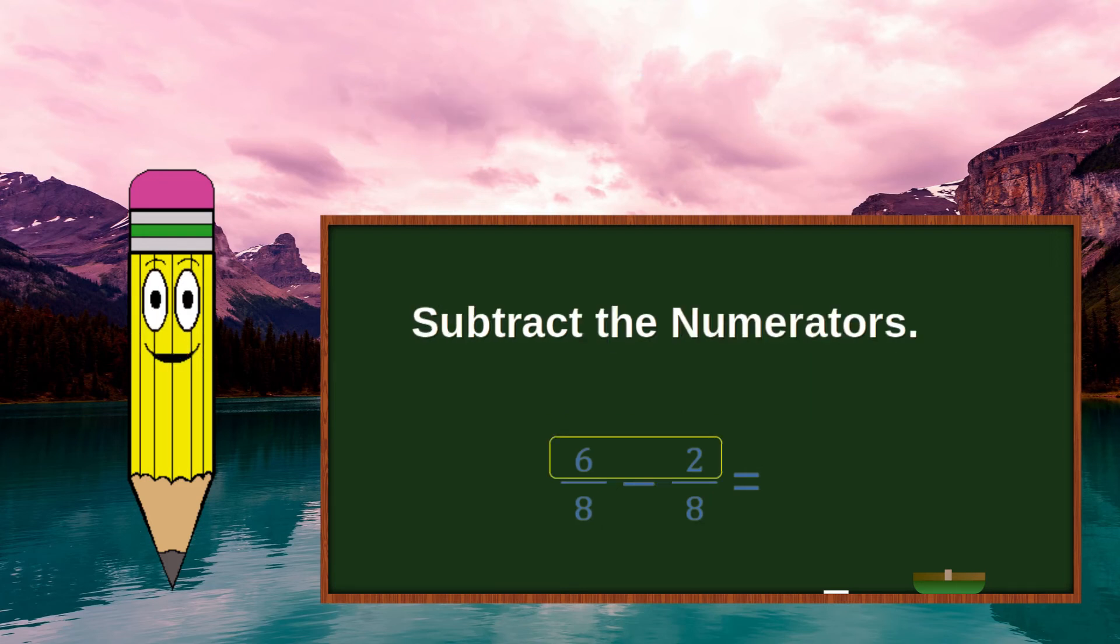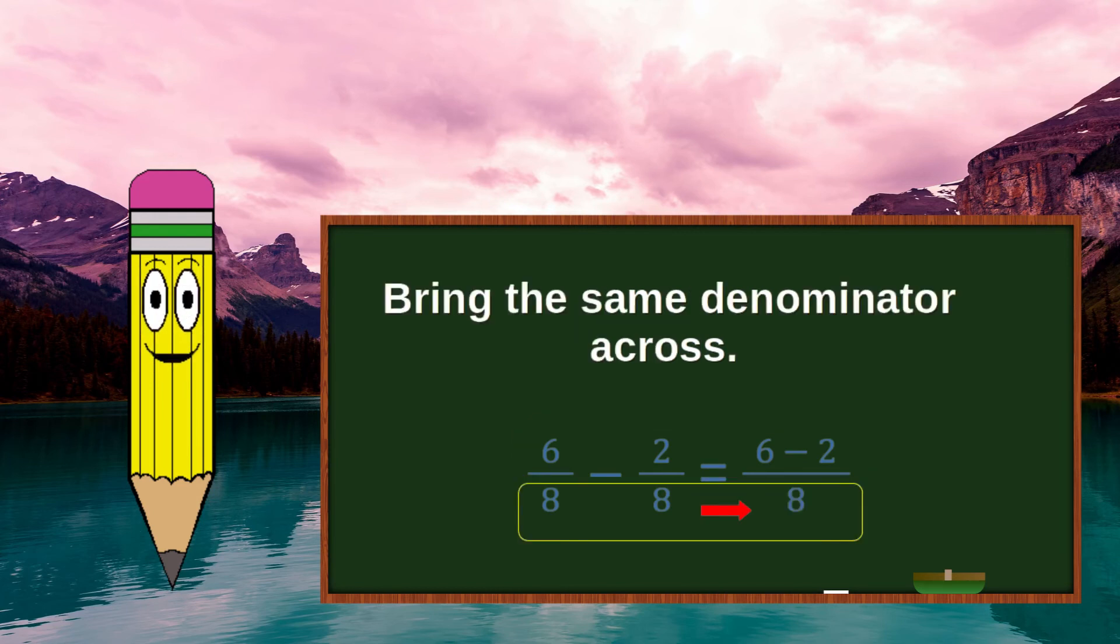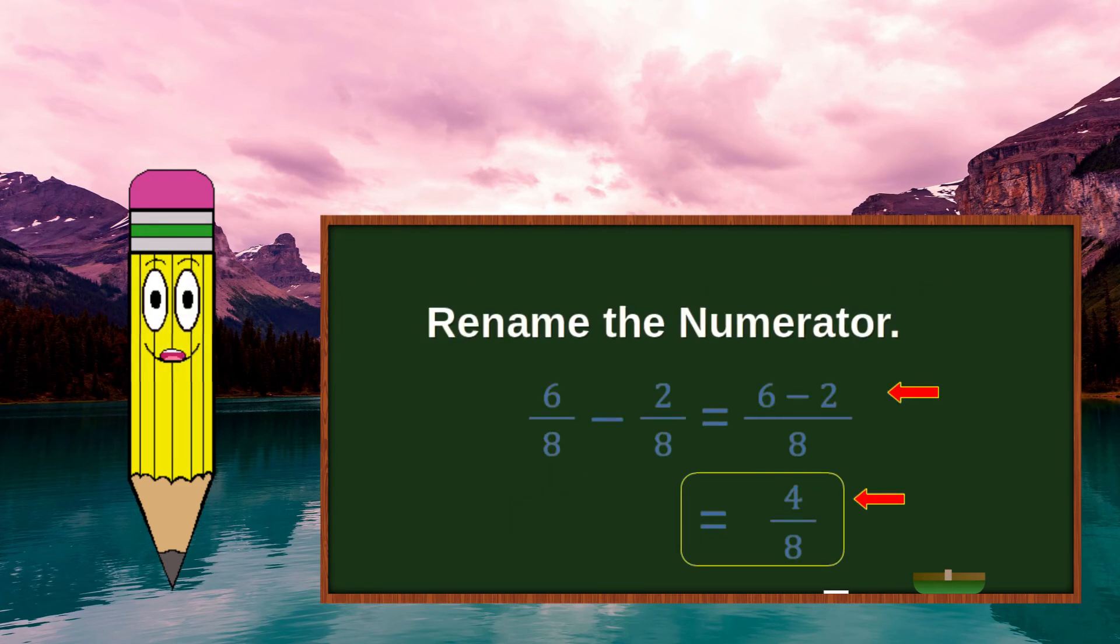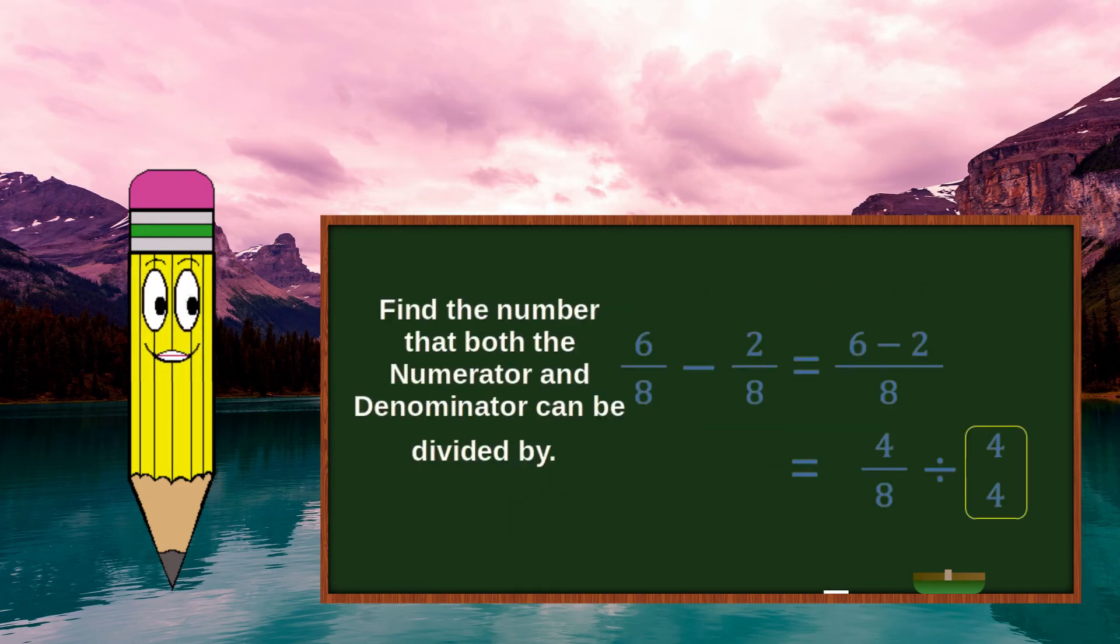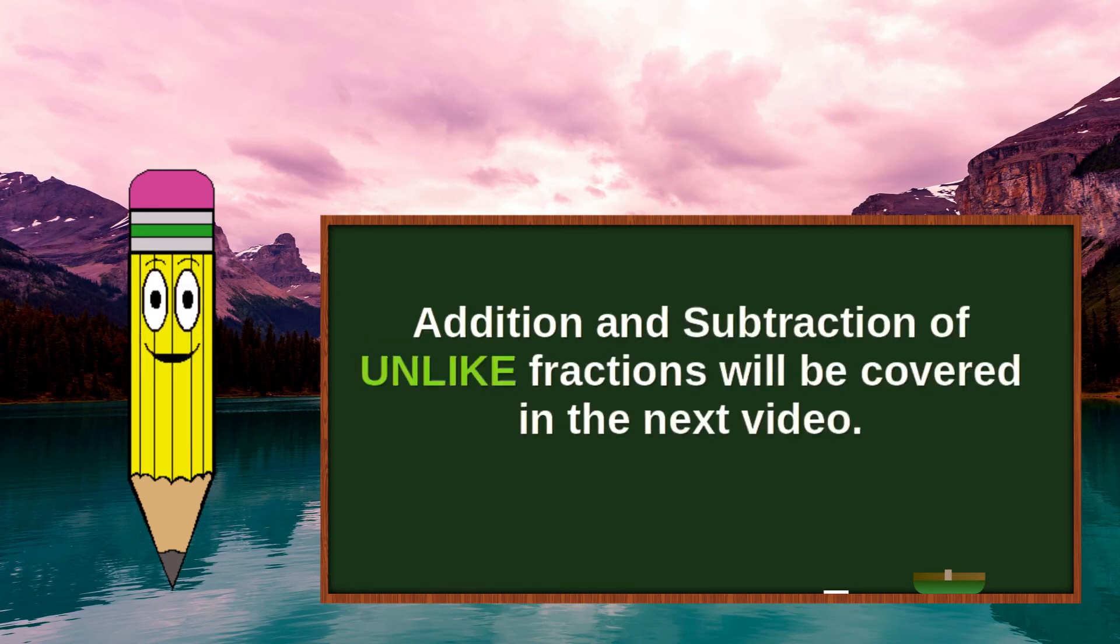Bring the same denominator across. Rename the numerator. Find the number that both the numerator and the denominator can be divided by and simplify to obtain the final result. Addition and subtraction of unlike fractions will be covered in the next video.